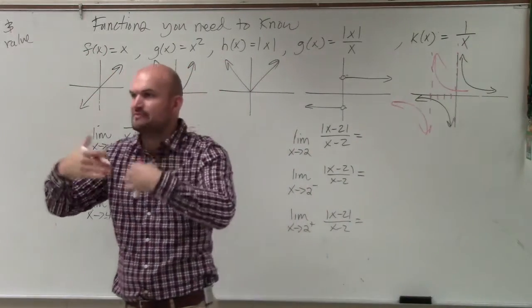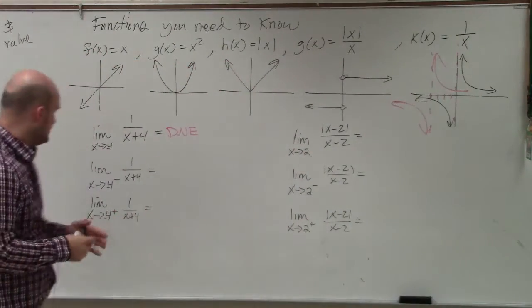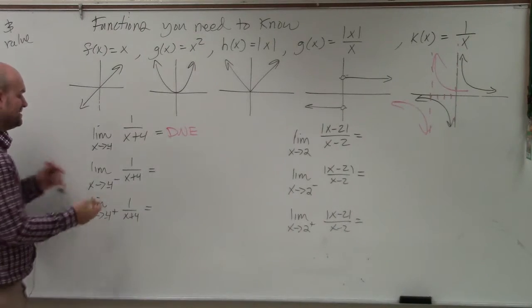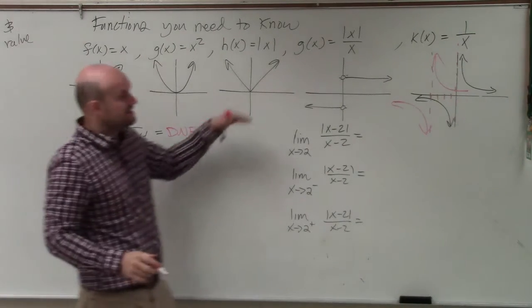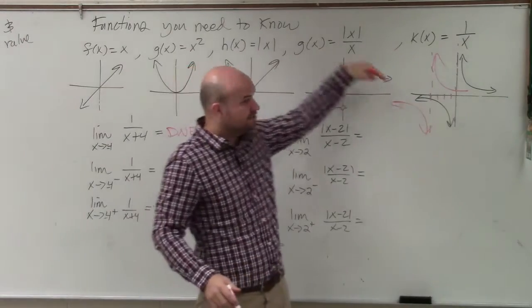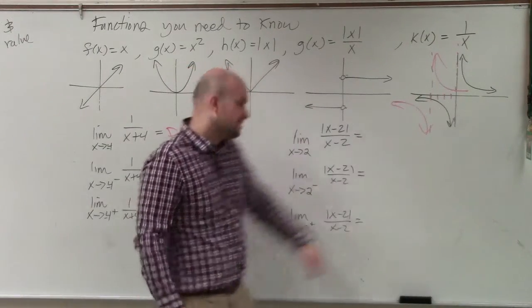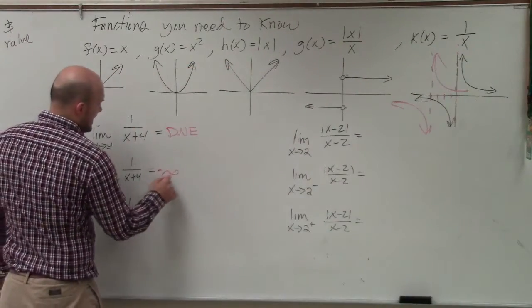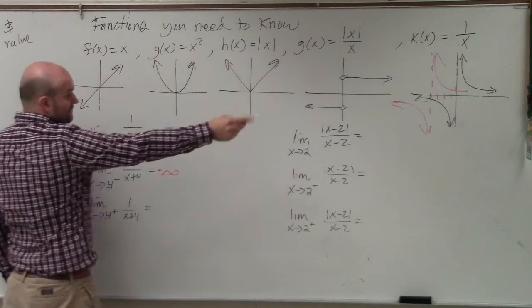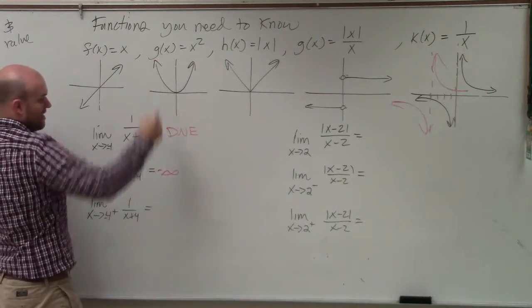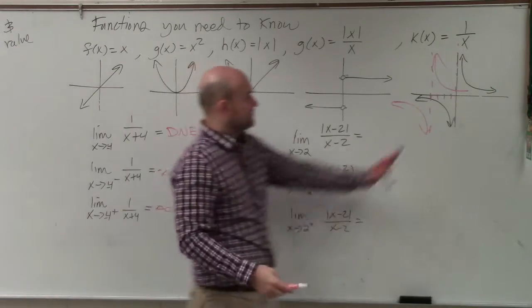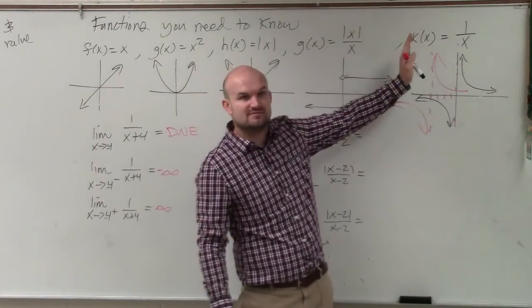For a limit to exist, it has to approach from the left and from the right. However, if we're just looking at the left and right-hand limits, if we're approaching the limit from the left, you guys can see that knowing what this graph looks like, you know the graph shoots down. So therefore, it is negative infinity. And looking at it from the right-hand limit, you guys can see that that graph is going to the positive infinity. From the right-hand side, you guys can see it's going up to positive infinity.